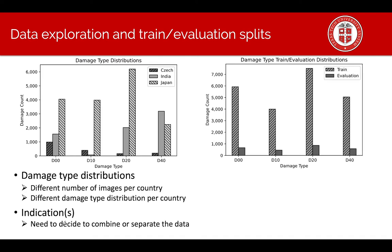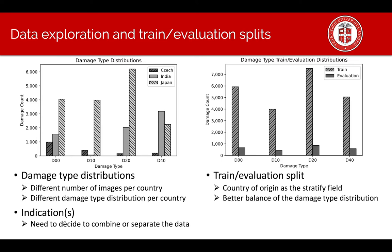Next we do the train evaluation splits. We use country of origin as the stratified field. If we combine the data we have better balance of the damage type distribution. It may help because damage types complement one another, but may hurt because one country might dominate in a specific type of damage.